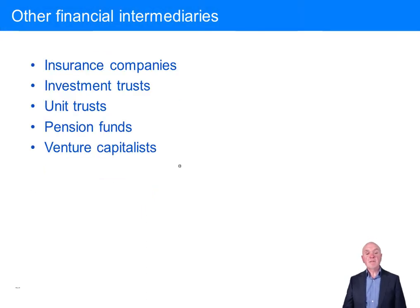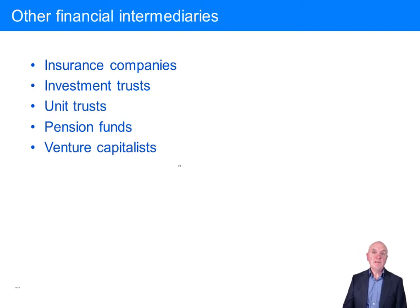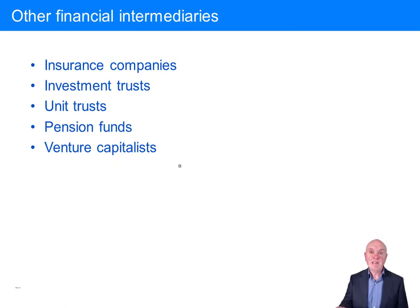Other financial intermediaries: we have insurance companies to handle some of the risk. They insure your car, your home, and your business in case you damage a customer in some way.